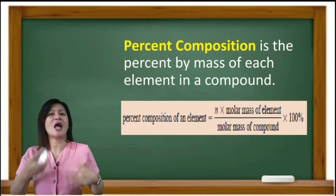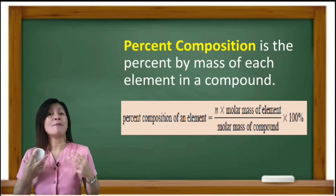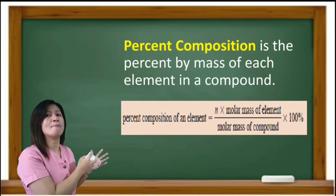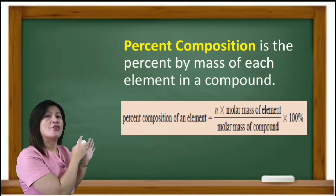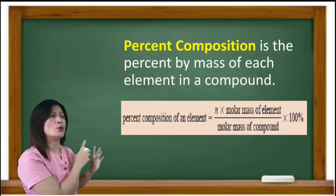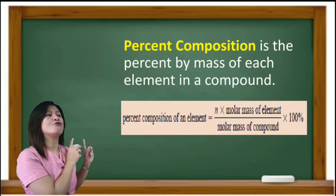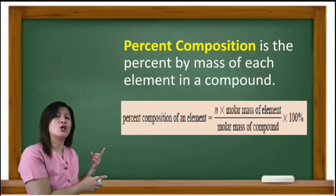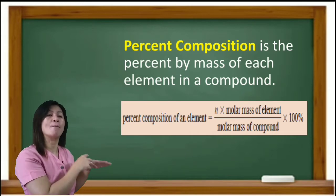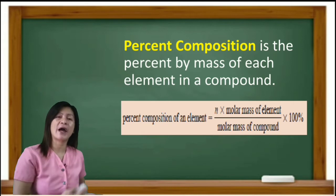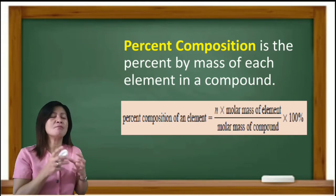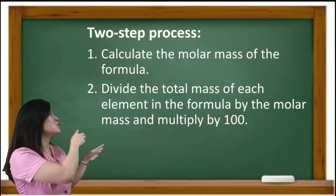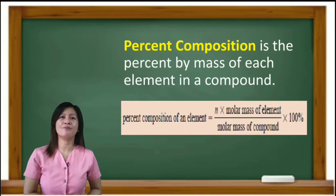So if you have two elements in a compound, then you will have to do two calculations for percentage. The general formula: percent composition of an element in a compound equals n times the molar mass of that element, where n stands for the number of atoms of that element in a compound, multiplied by the atomic mass from the periodic table, divided by the molar mass of the whole compound, then multiplied by 100.